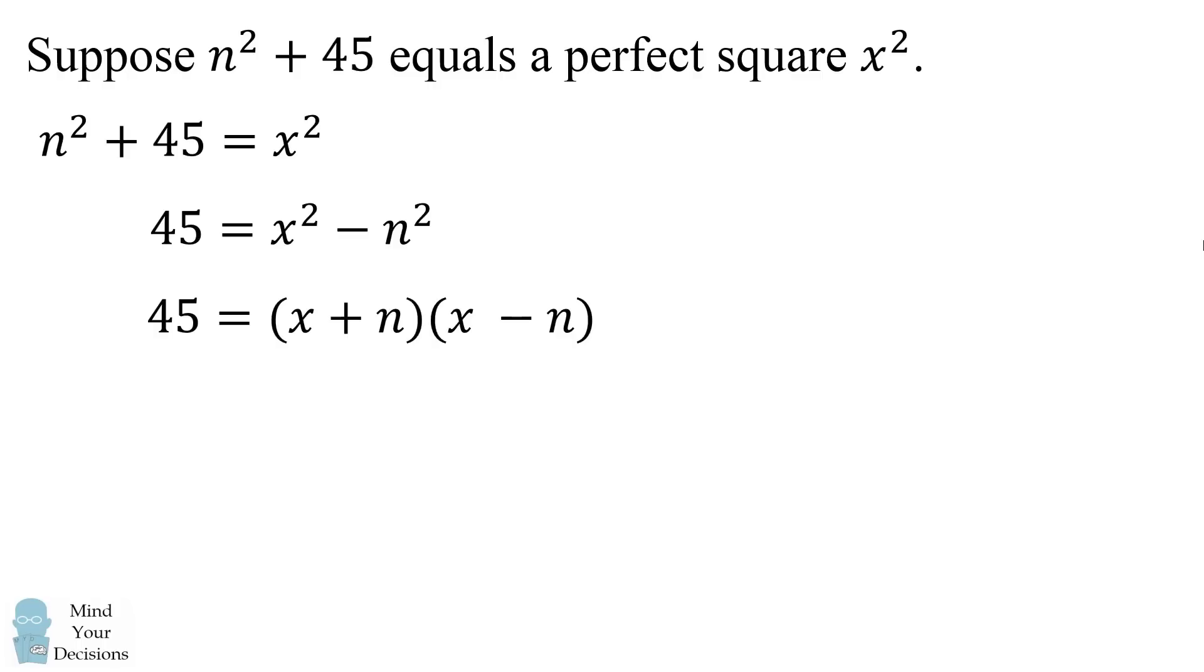So we're looking for two factors of 45. The possibilities for this can be 45 times 1, 15 times 3, and 9 times 5.